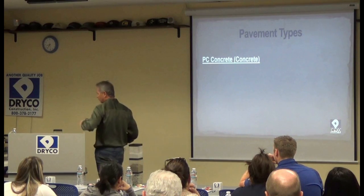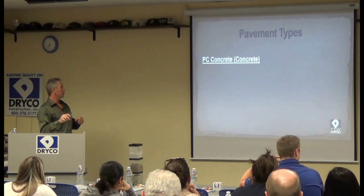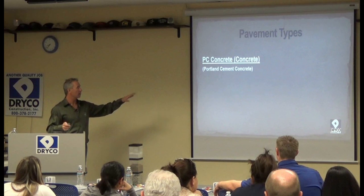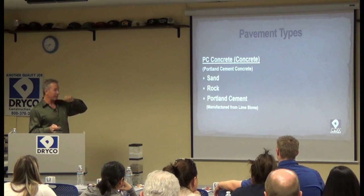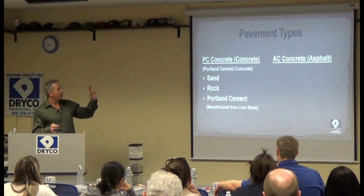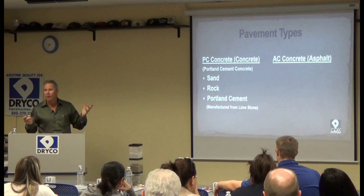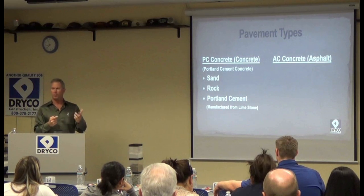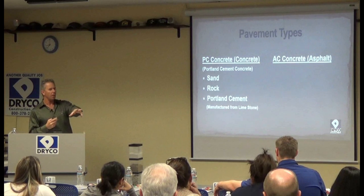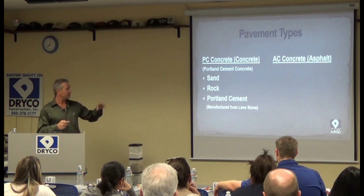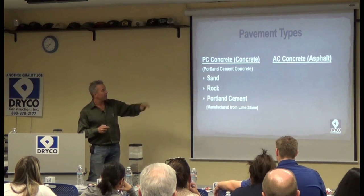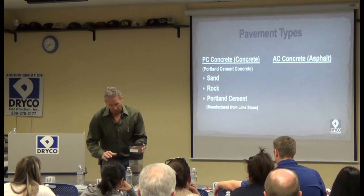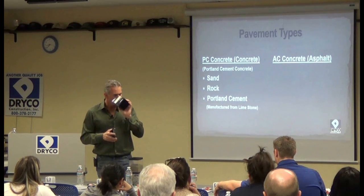Portland cement concrete: sand, rock, Portland cement — manufactured from limestone. Now, asphalt cement concrete. We call one asphalt and one concrete. For our purposes, we'll call the white stuff concrete and the black stuff asphalt. Technically it's Portland cement concrete and asphalt cement concrete. The difference is in the binder — and the binder is this liquid asphalt instead of Portland cement. And this smells like money — pass it around, everybody loves the smell of asphalt.